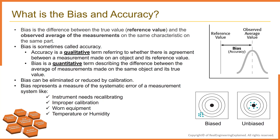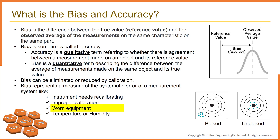Accuracy and bias refer to the absolute correctness of the measurement system relative to a golden sample or gauge block. Bias represents a measure of the systematic error of a measurement system. Sources of bias include: instrument needing recalibration, improper calibration, worn equipment, damaged master or golden sample, and temperature or humidity.